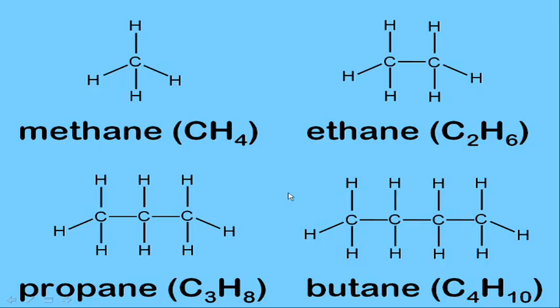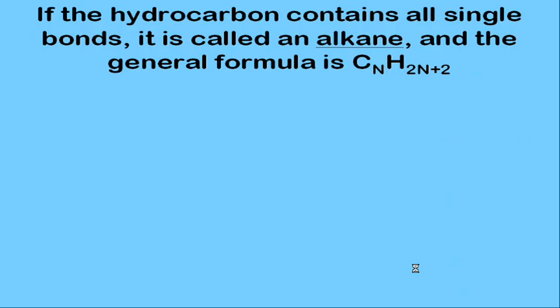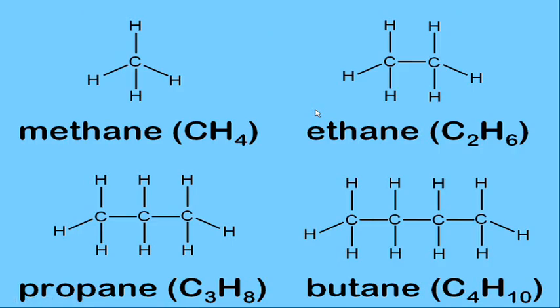The simplest hydrocarbon is CH₄, called methane. Two carbons is called ethane, C₂H₆; three carbons is propane, C₃H₈; and four carbons is butane, C₄H₁₀. What these all have in common is that they have all single bonds, their name ends with -ane, and the formula follows the pattern CₙH₂ₙ₊₂. This type of hydrocarbon is called an alkane.